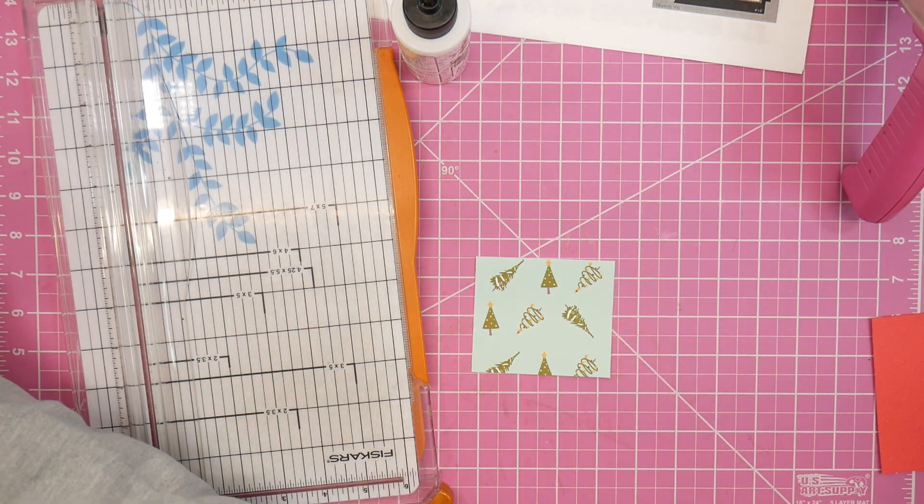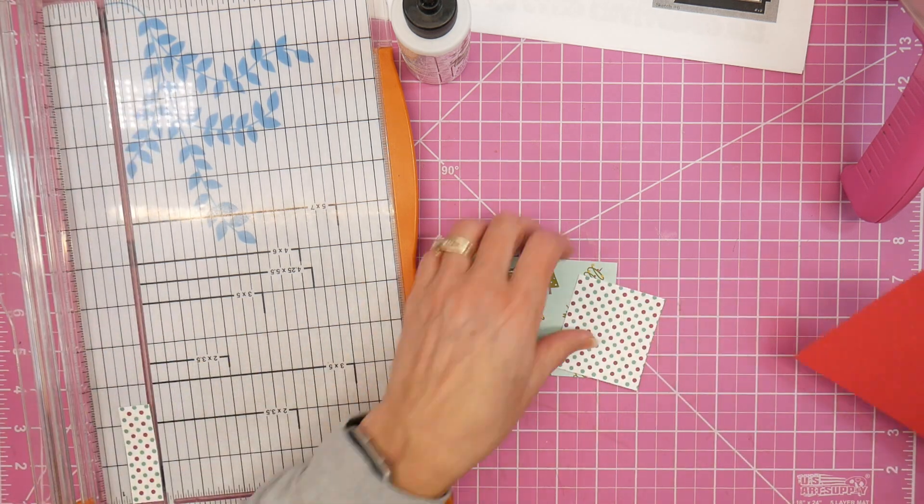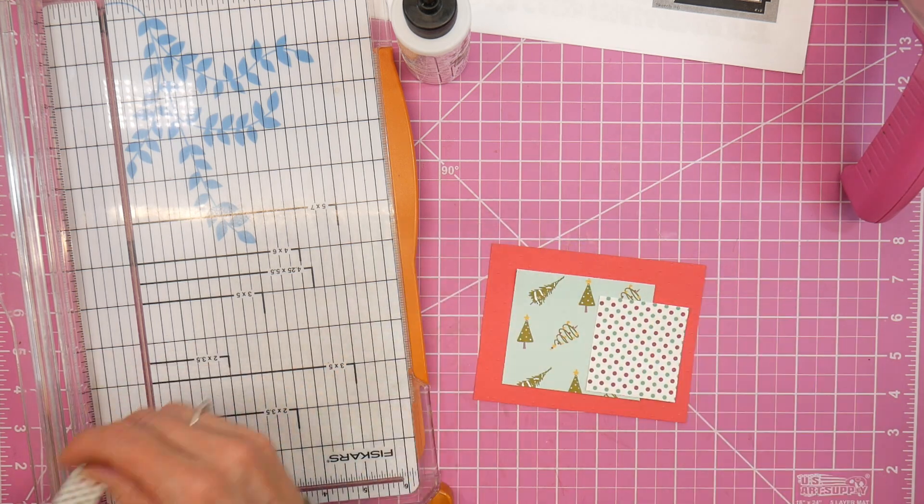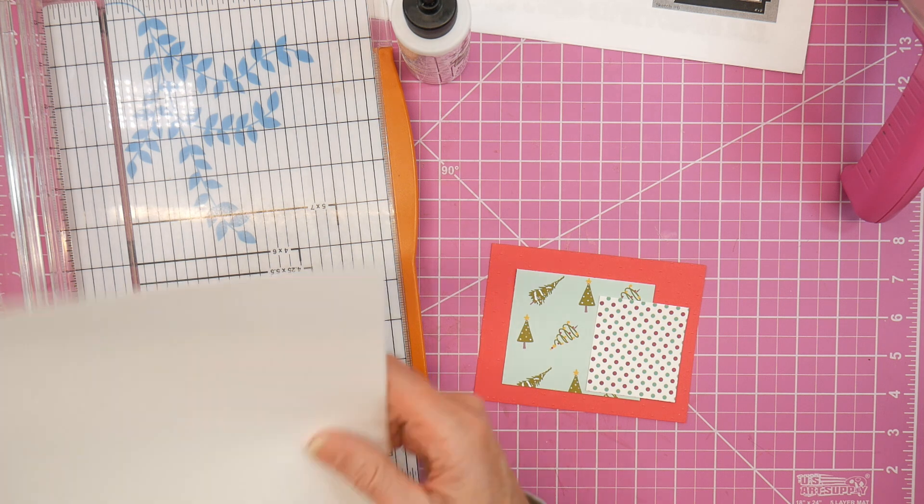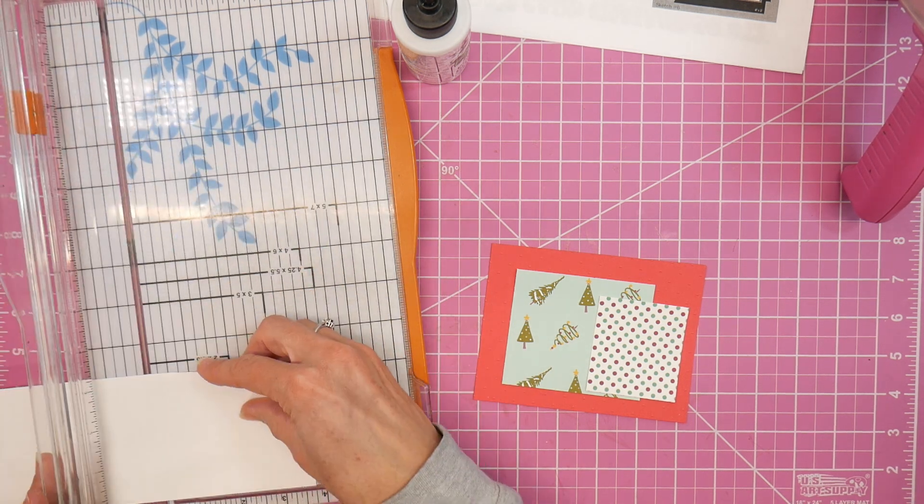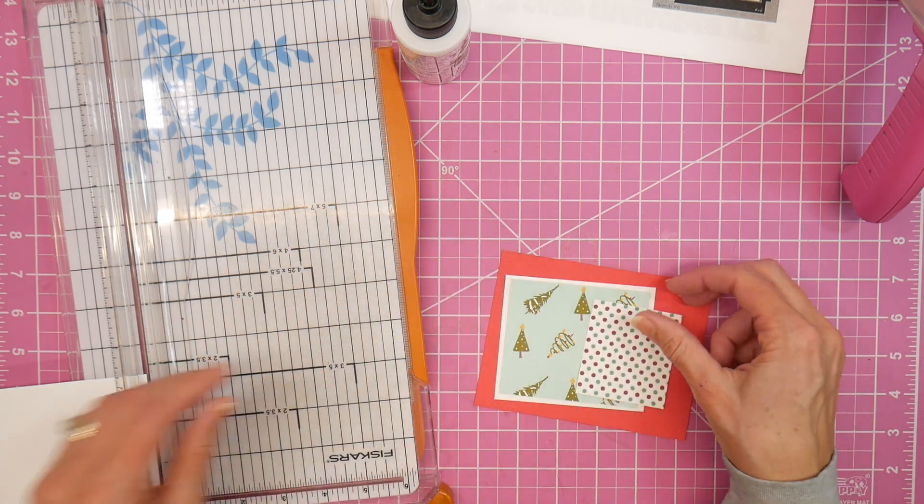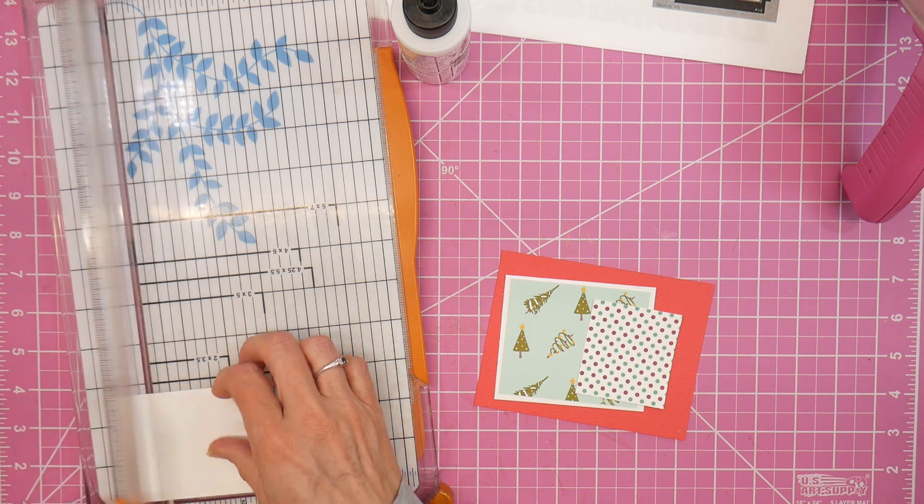Now I'm gonna move on to number six. This time I'm using the Christmas tree and the polka dot papers as my focal patterns, and I will be layering those up on some white cardstock as well.